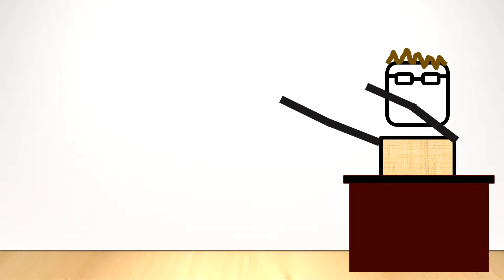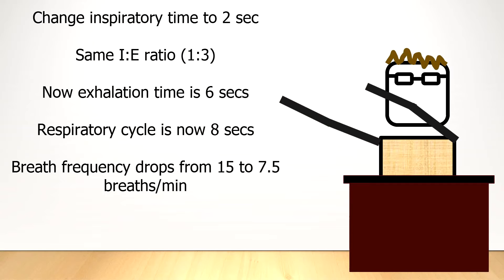If you want to increase the inspiratory time up to 2 seconds, but don't change the IE ratio, then the TI becomes 2 seconds, and the TE, or exhalation time, becomes 6 seconds, in order to maintain the IE ratio of 1 to 3.